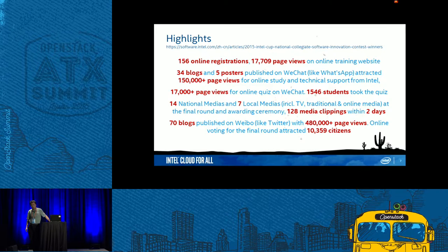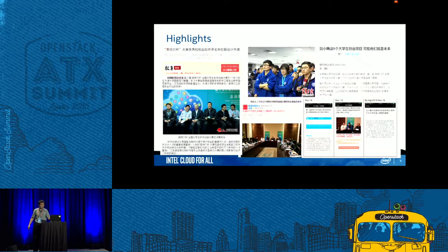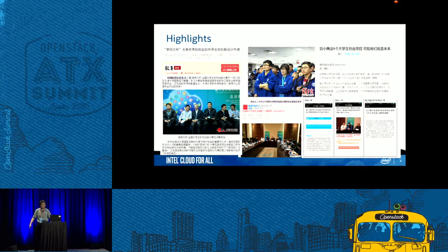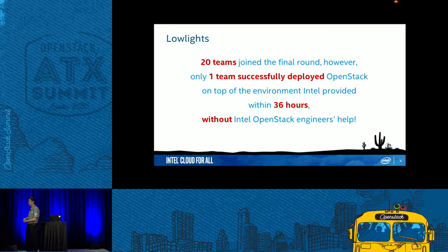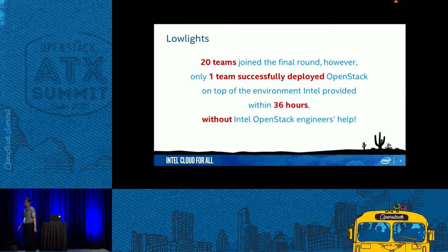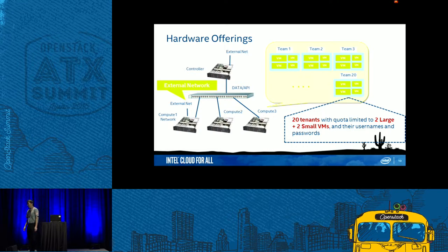Now let's look at something bad. This is a snapshot of media coverage on the internet. For the worst things — at the final round there were 20 teams, but only one team successfully deployed OpenStack within 36 hours without any help. The cloud setup was not complex, just several nodes, but only one team succeeded.